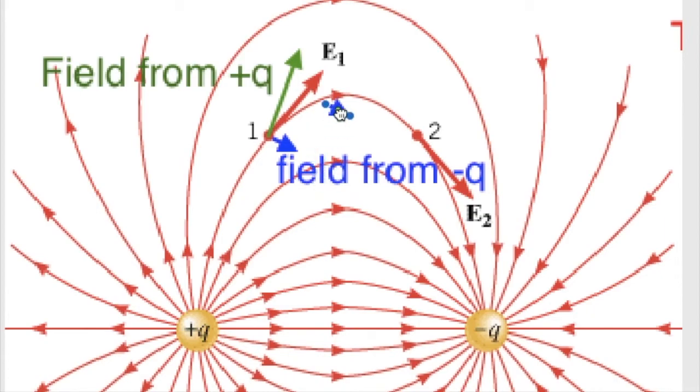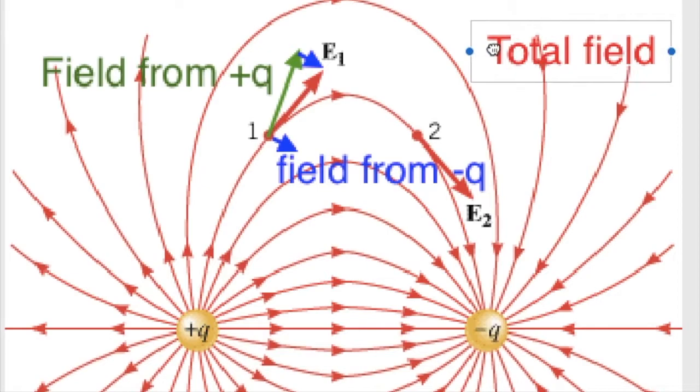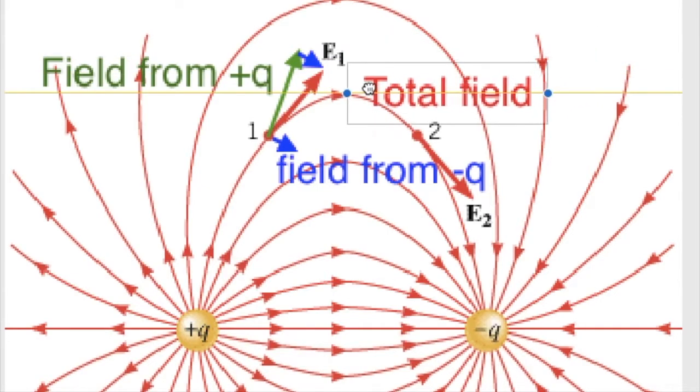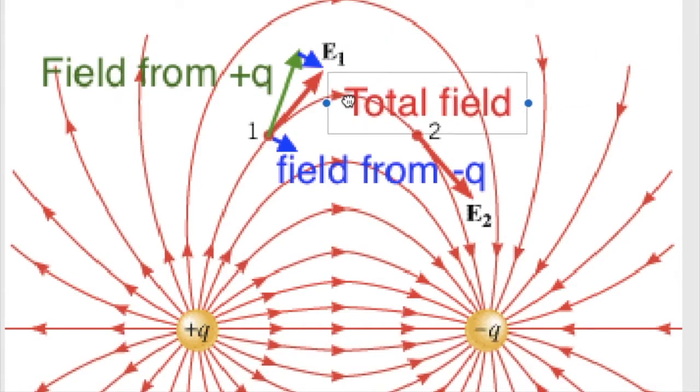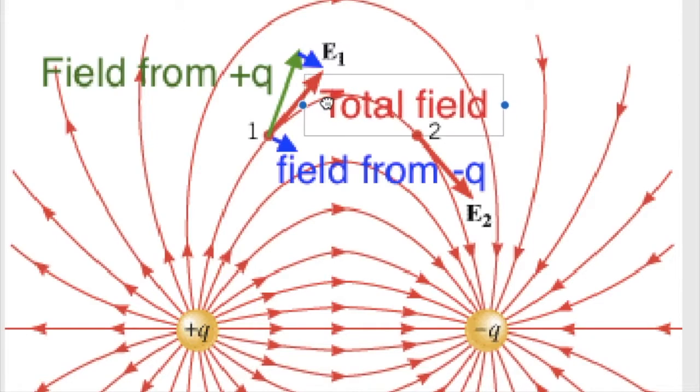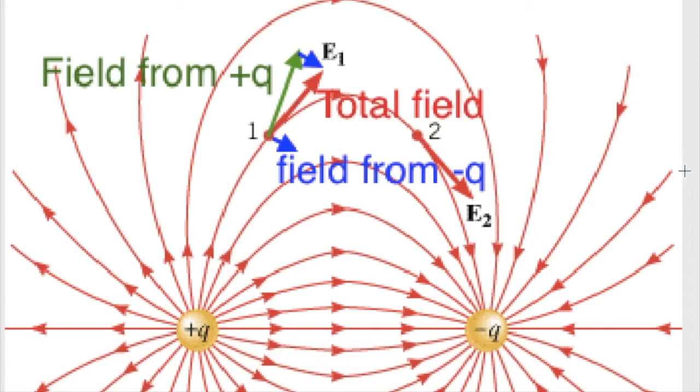Electric field is a vector, so I have to add them together the way that vectors do. That would make this red line here the total field as a result of adding together the green line, which is the field from the positive q, and the blue line, which is the field from the negative q. So the red is the total field. The idea is I could use that trick to figure out what the total field is at all these different points in space.